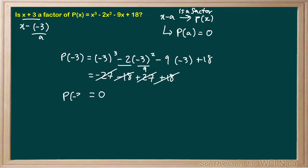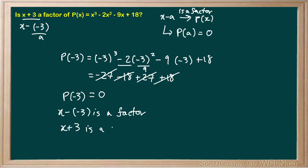So p of negative 3 is 0, which means that x minus negative 3 is a factor. Or in other words, x plus 3 is a factor of p of x.